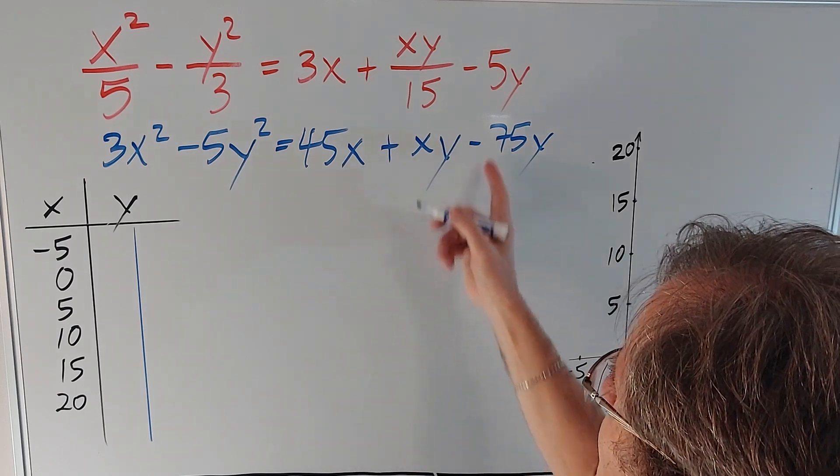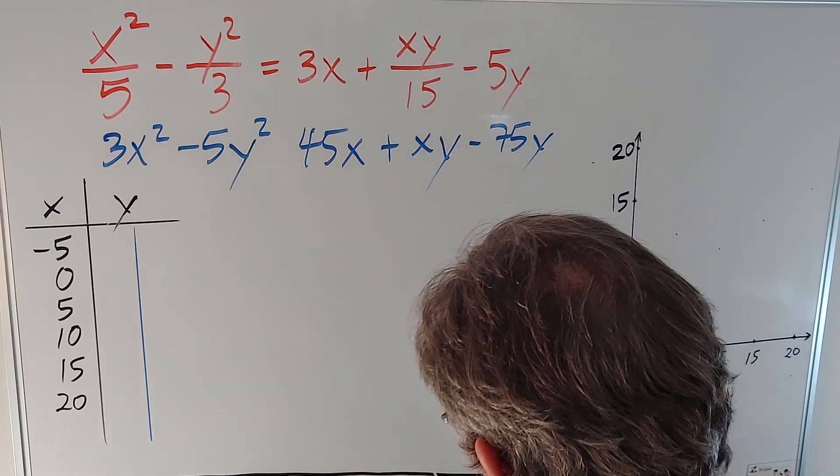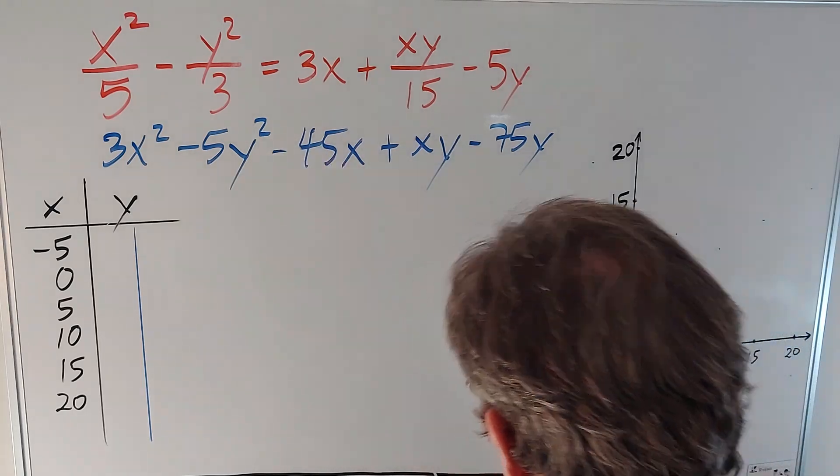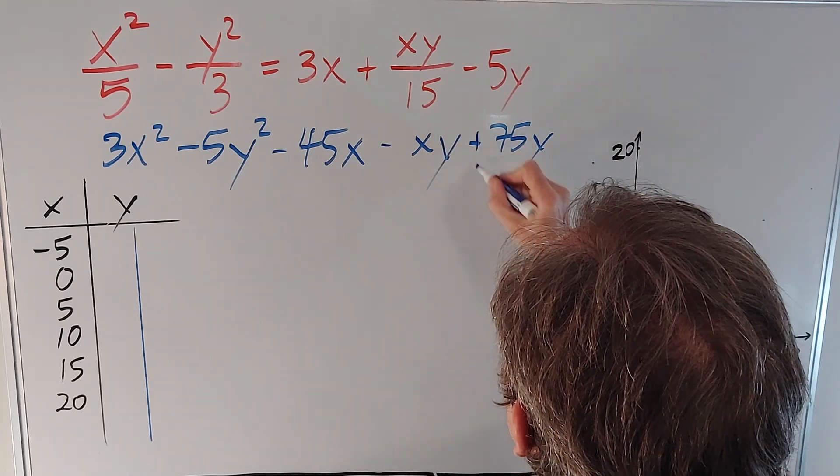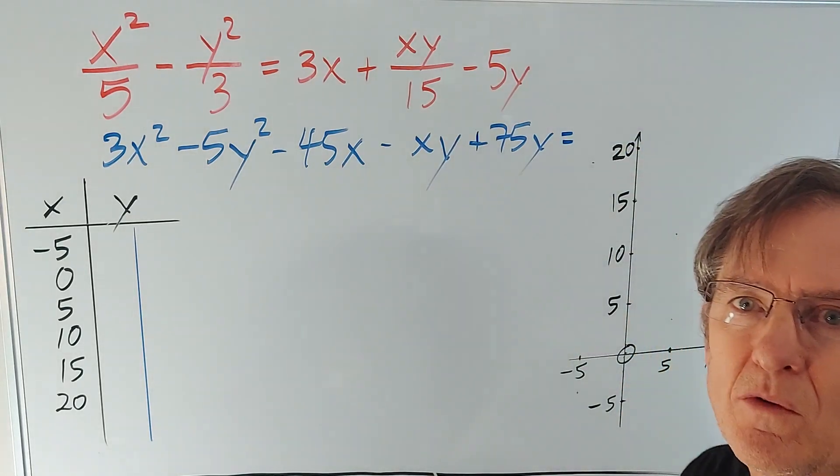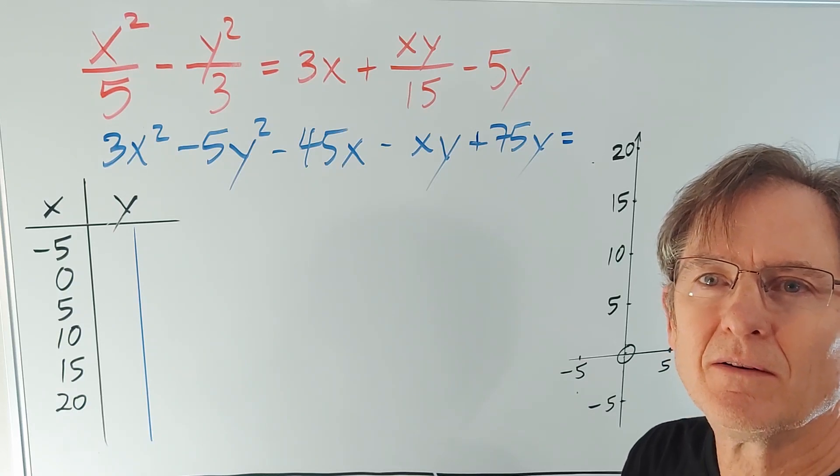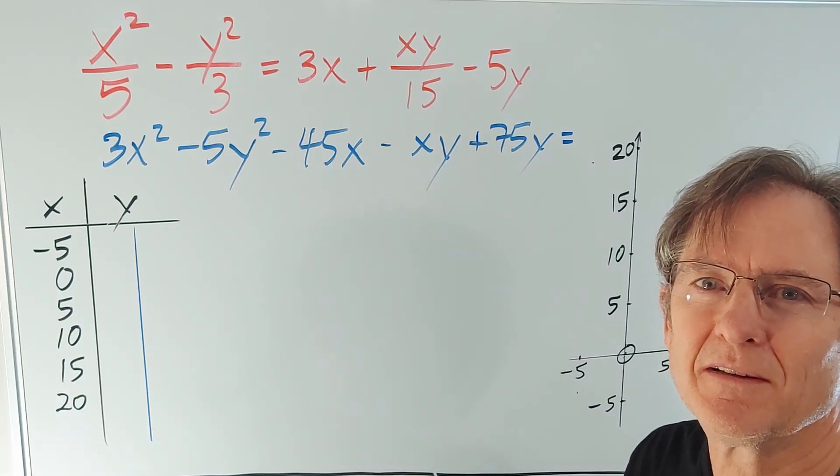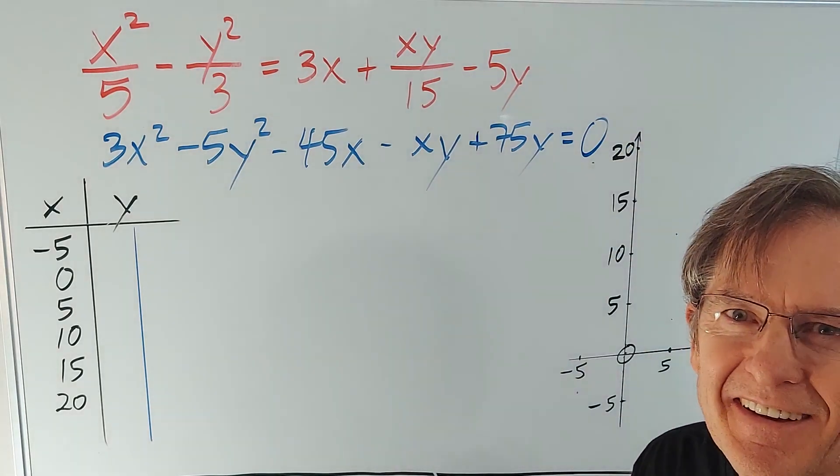And it might be a good idea to bring everything to the left-hand side. If I do that, this will become negative, this will become negative, this will become positive. And that will be equal to what? What's left over on the right-hand side? Don't say zero. Remember the other video? Big fat zero. There you go. Alright.